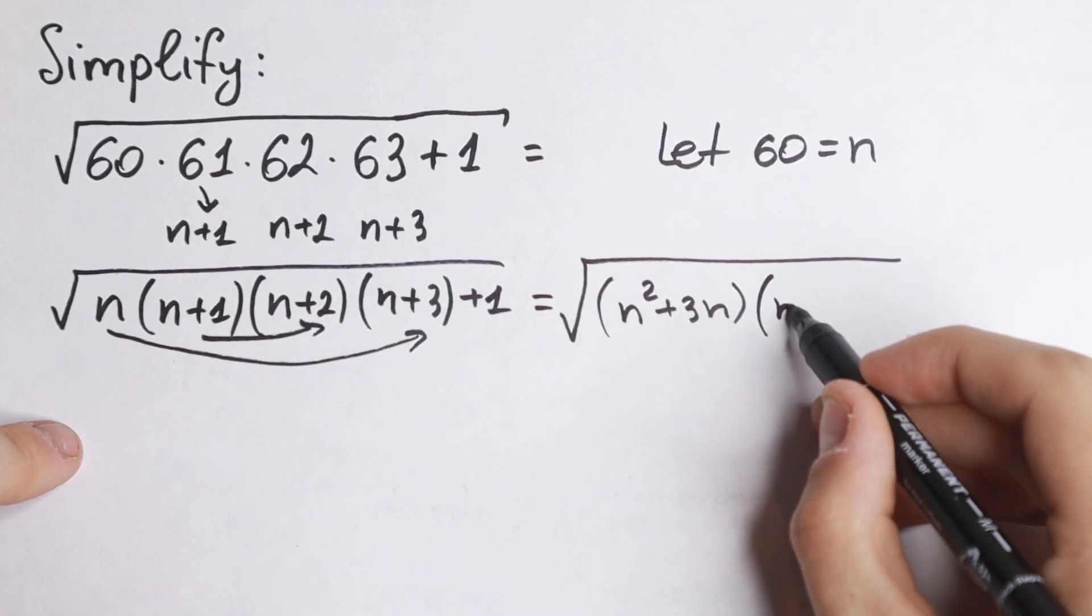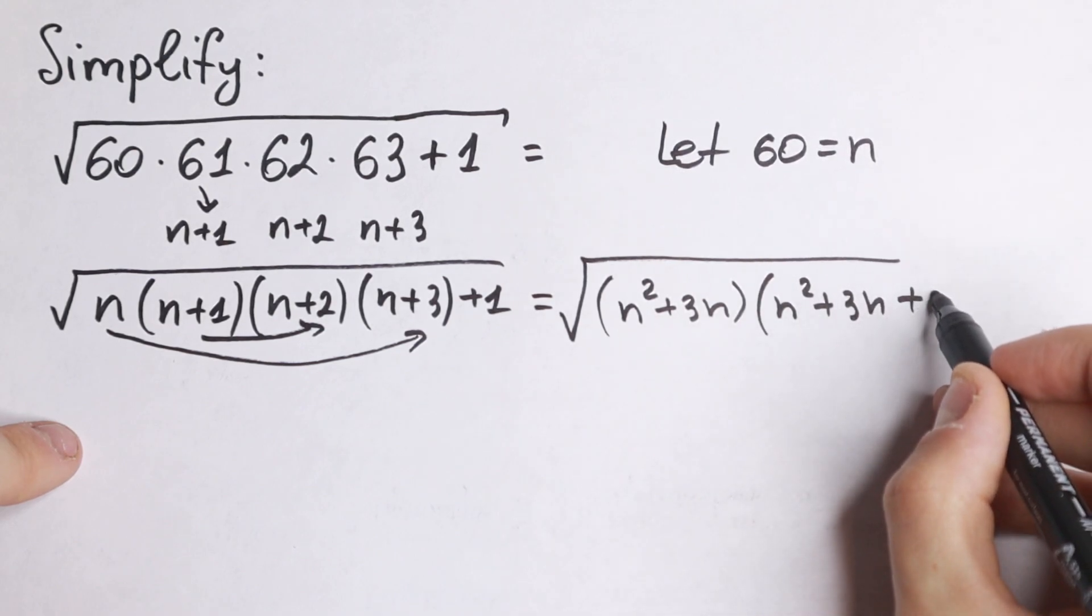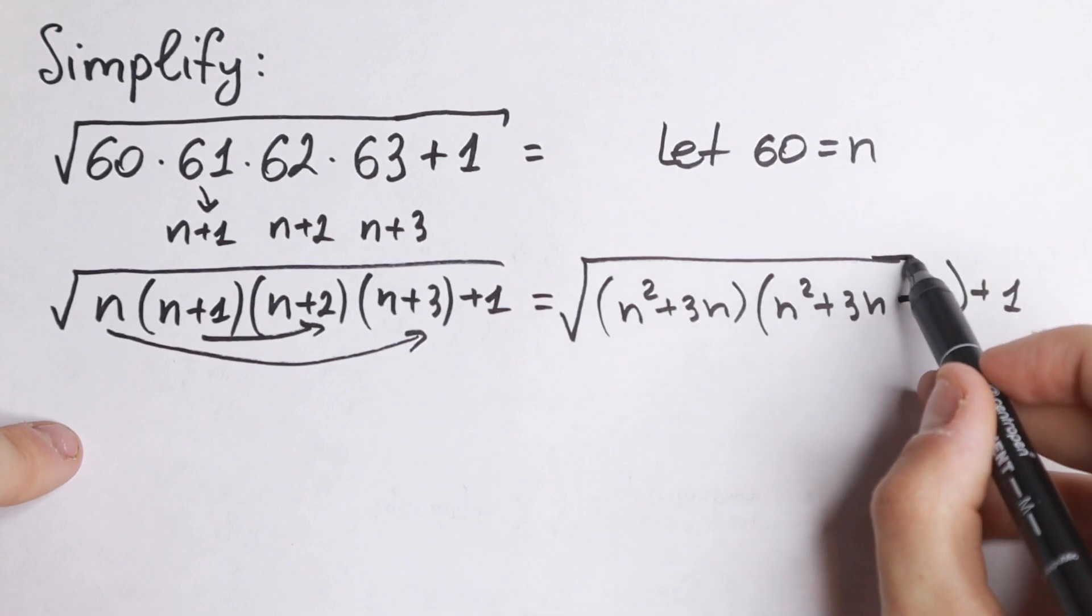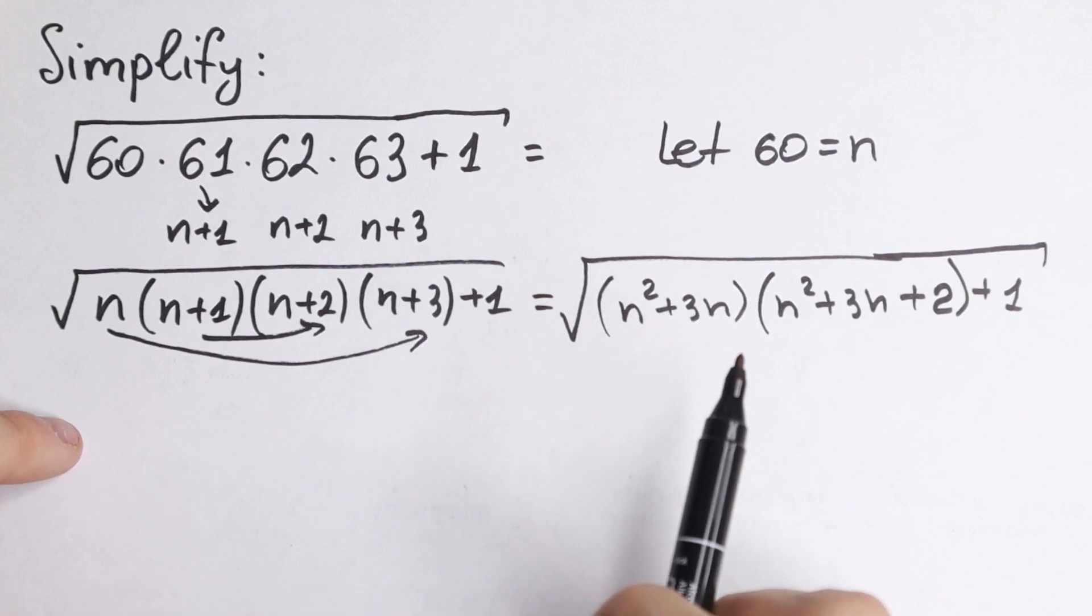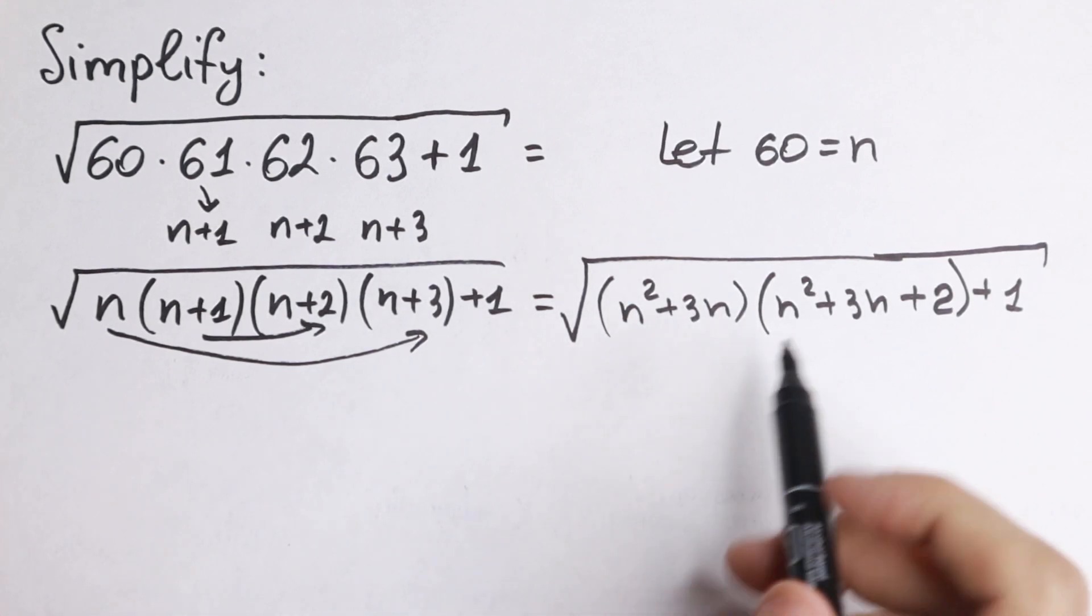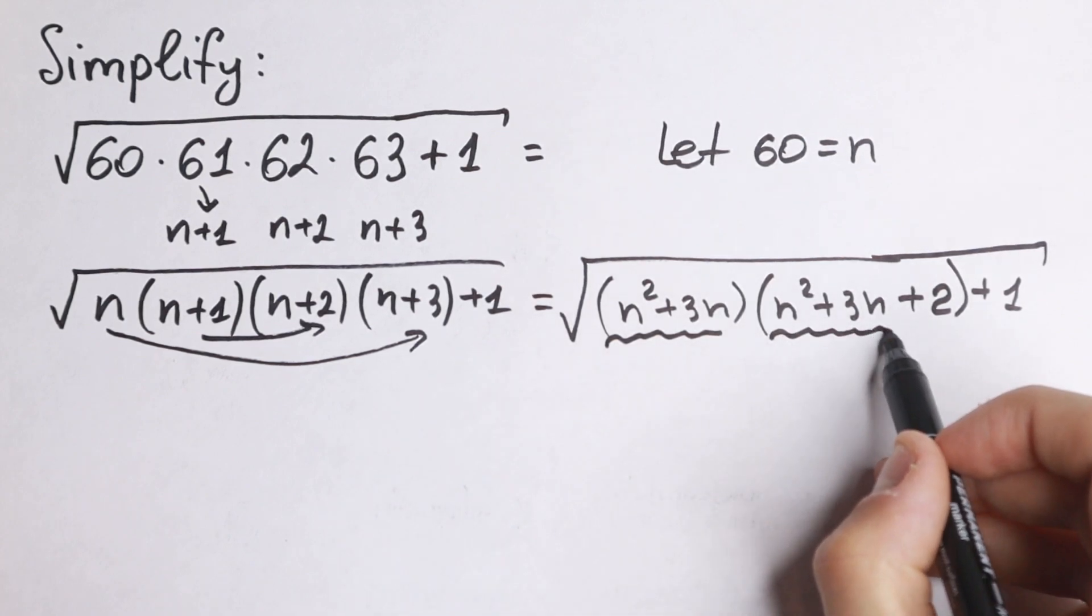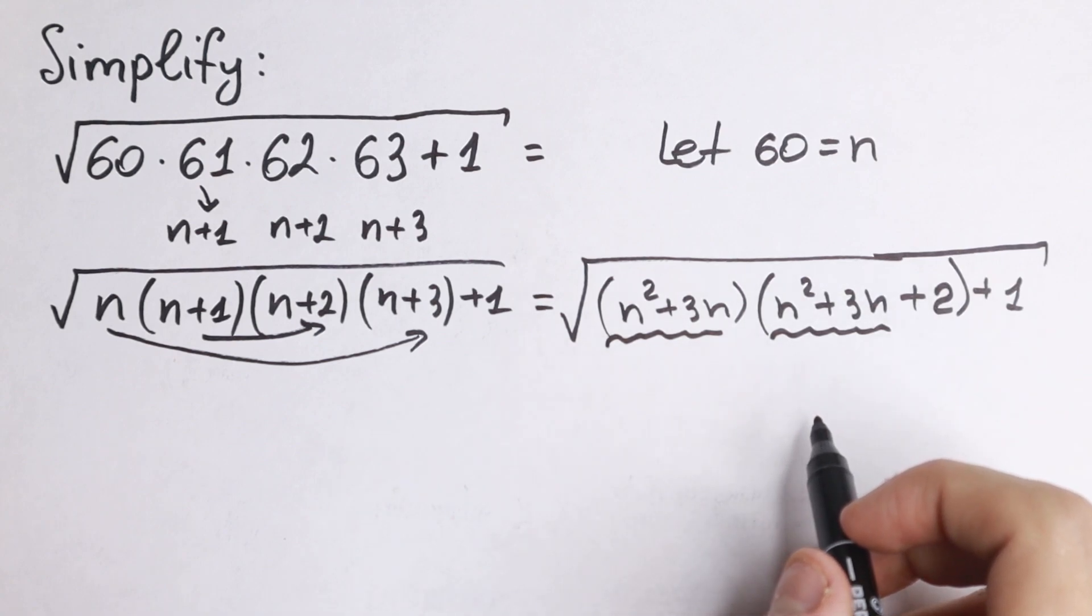As a result, you have n square plus 3n and n square plus 3n plus 2, and in the end plus 1. We just changed these values by n. If you look closely to this expression, we can see that n square plus 3n appears twice, so we can easily use a substitution.